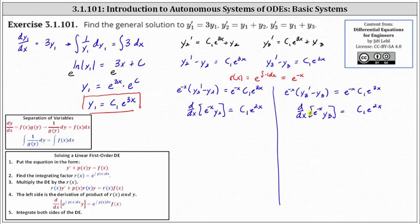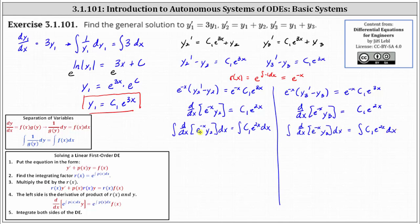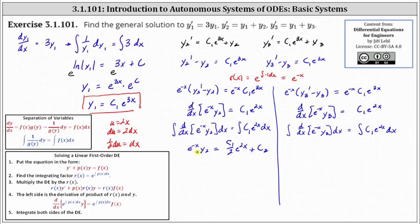We integrate both sides of both equations with respect to x. For the second equation, the integral undoes the derivative, leaving e to the negative x times y two on the left. On the right, we use u-substitution where u equals two x, du equals two dx, so one half du equals dx. The antiderivative of c one e to the two x is c one over two times e to the two x plus c sub two. Multiplying both sides by e to the x gives y two equals c one divided by two e to the three x plus c two e to the x.